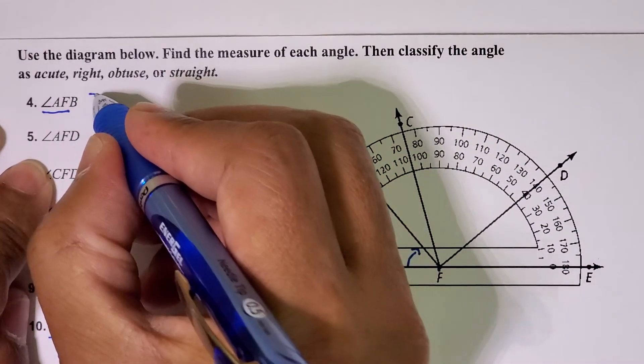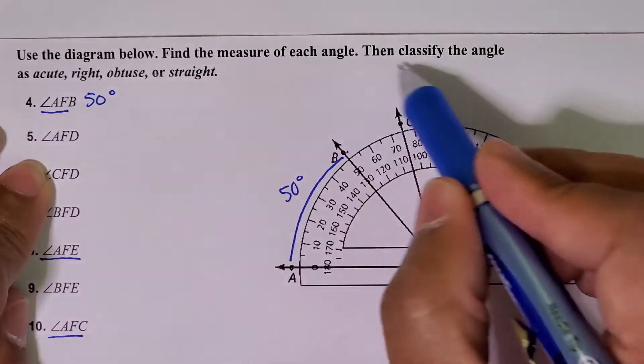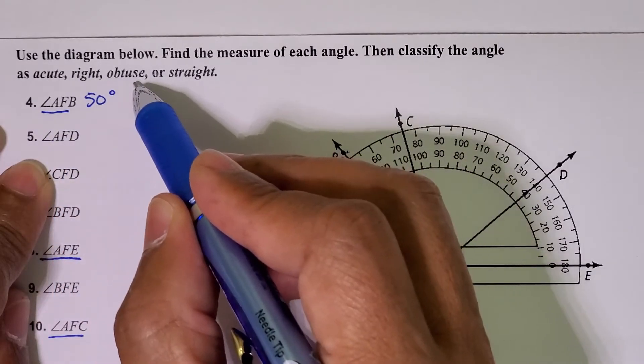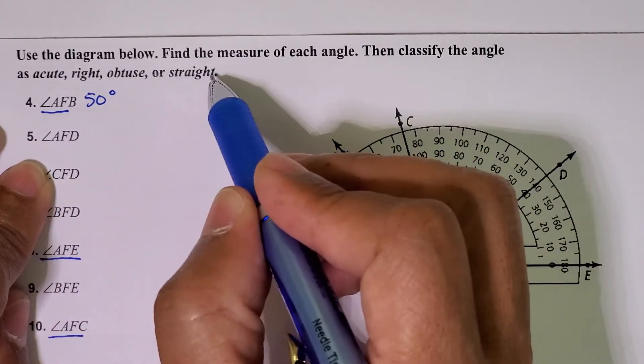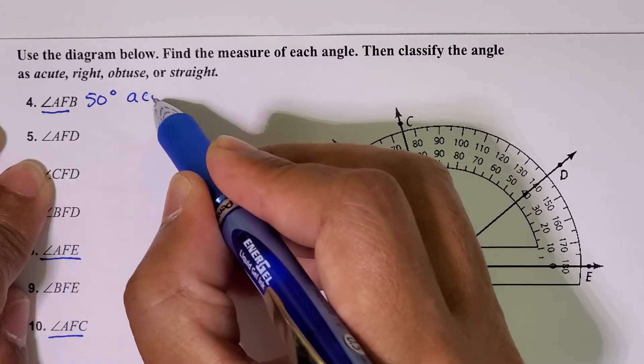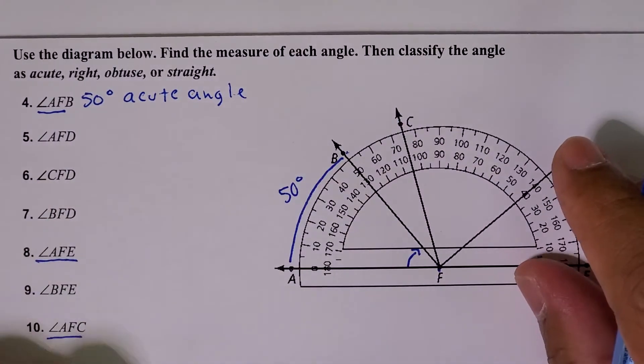So the answer to this problem is that the angle has a measure of 50 degrees. They also want us to classify the angle as acute, right, obtuse, or straight. But we know that 50 is less than 90, so this is an acute angle. You can just write acute, and that's fine.